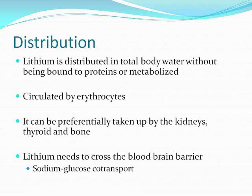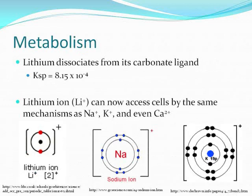The erythrocytes can circulate lithium to different parts of the body as they themselves are circulated. Lithium is preferentially taken up by the cells of the kidneys, thyroid, and bone, but its therapeutic target is in the brain. Therefore, what lithium isn't absorbed elsewhere needs to cross the blood-brain barrier to get to the neurons, which it does by substituting in for sodium in sodium-glucose co-transport. Lithium is not really metabolized at all since it is just an ion, but it can dissociate from its ligand in solution.